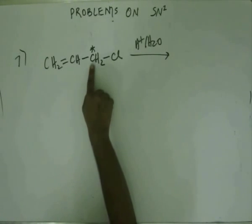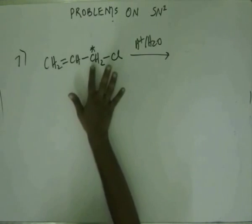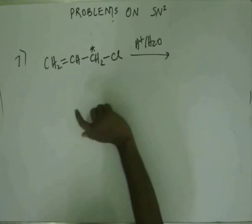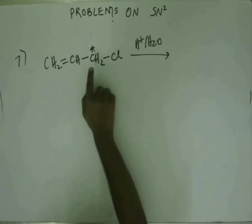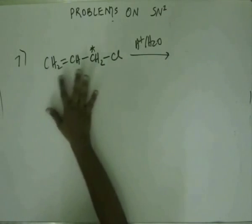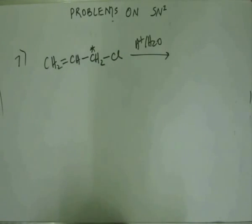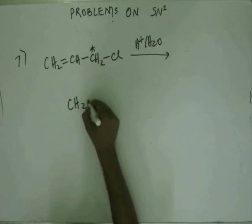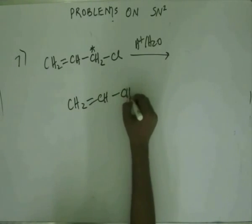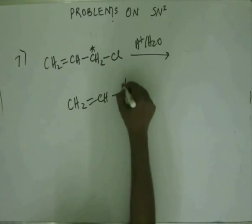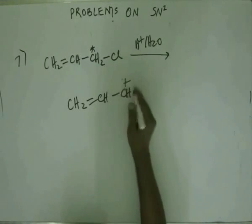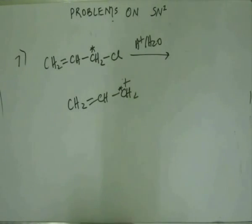The starred carbon signifies an isotope of carbon — that means this is C14. The asterisk mark signifies isotopic carbon. So these other carbons are C12, and this one is C14. If that happens, a plus charge will come on the asterisk-marked carbon.